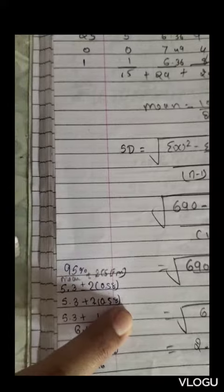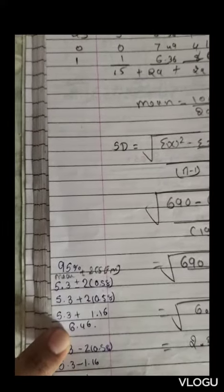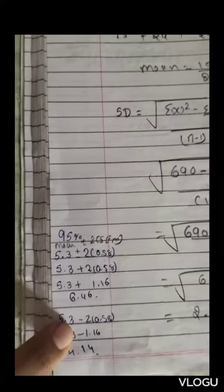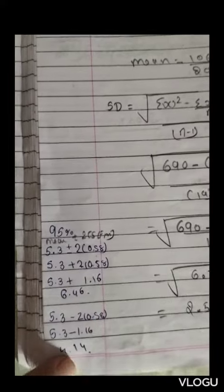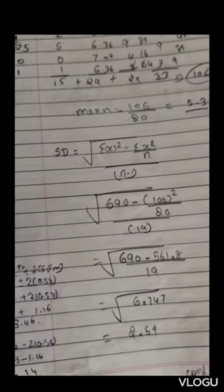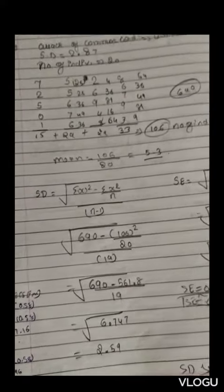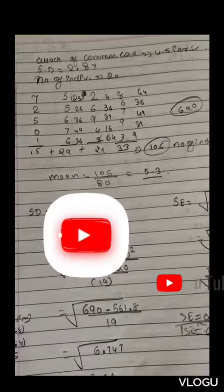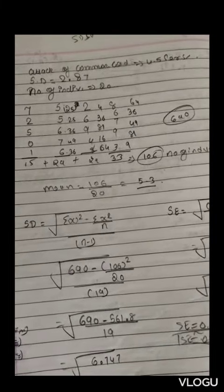Doing plus 2 times standard error gives 6.46. For minus, I get 4.14. Thank you for watching my video. Subscribe to my channel to never miss any notification from biostatistics videos.